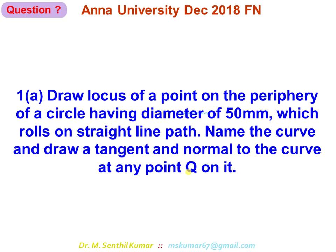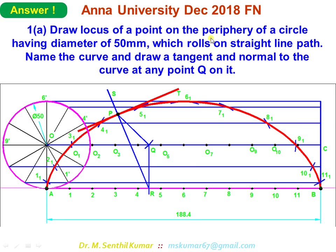Since this is a solved question paper, I'm not in a position to teach the steps — I'll be showing the final answer for each problem. There are 10 problems in this question paper, 5 either-or type. So the answer: I have drawn a circle of diameter 50. It starts rolling on surface AB. The length AB equals the circumference of the circle. This is the curve traced by point A on the circle when it rolls freely without slip.